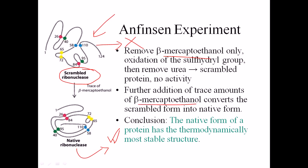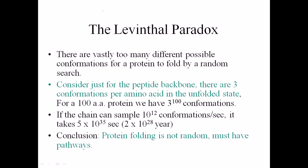An important point here is that the native form of the protein has the thermodynamically most stable structure. Even if we produce a structure very close — 99% similar — to the native conformation, the protein still wants to go to its native state. It is always a journey for the protein to reach the native state. Whether starting from a scrambled or unfolded state, the protein always moves toward the native state because that is the most thermodynamically favorable structure.